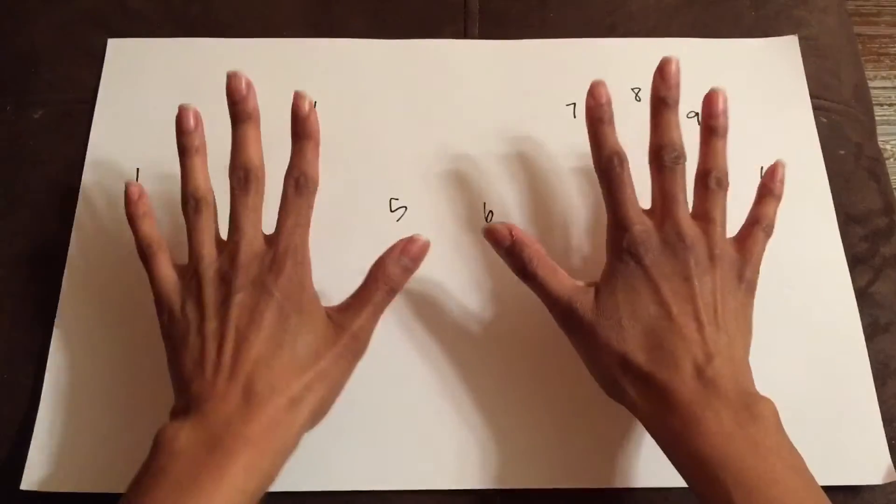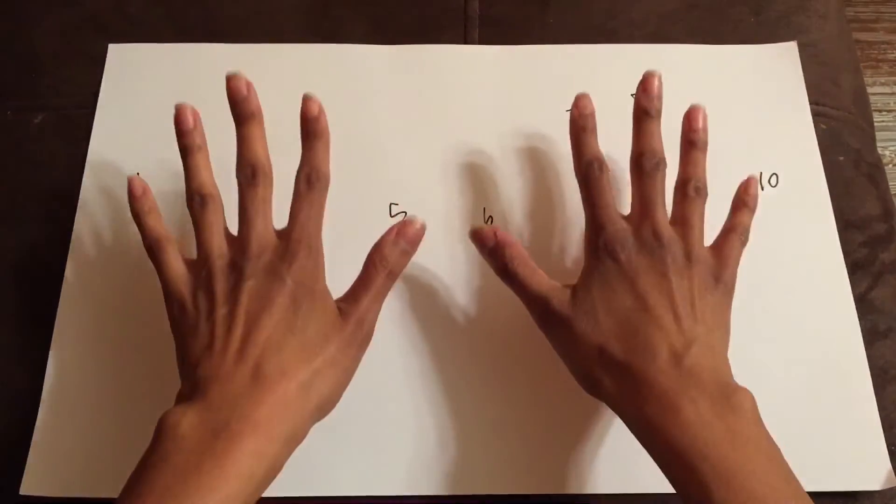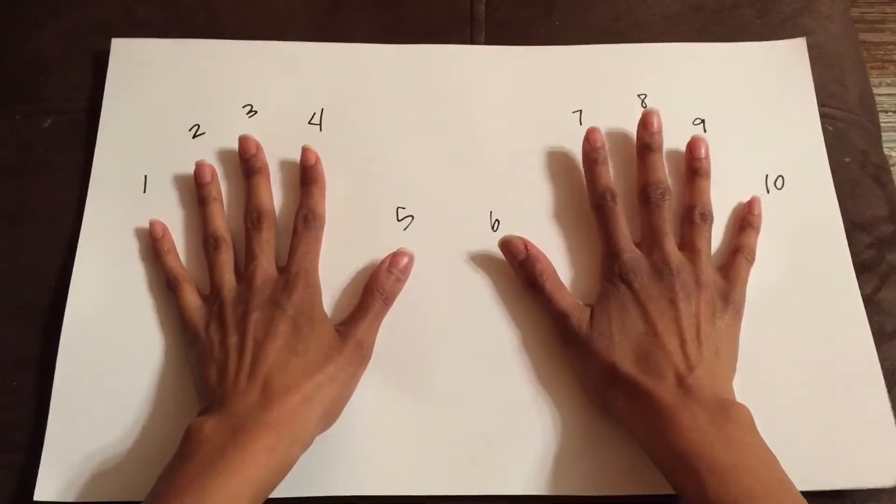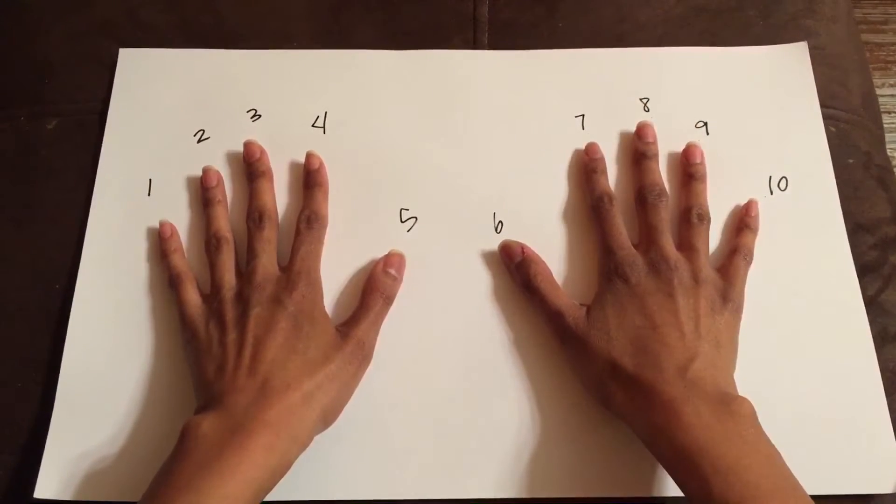When multiplying by nines, you can just figure out your answer just by using your hand. So you usually want to put your hands right in front of you, and I've numbered each finger so that you know which finger you need a reference to. And it just goes in order.